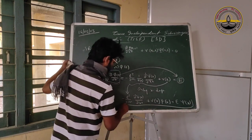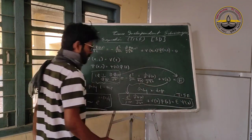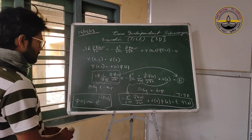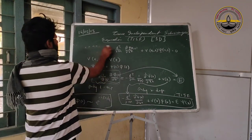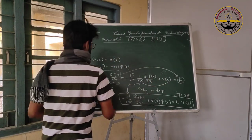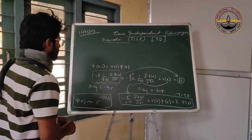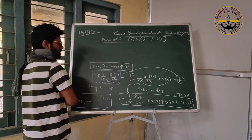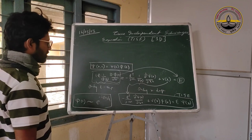This is our time-independent Schrödinger equation that we will be solving. The important question here is: what is the justification for this separation? We will discuss this because it is important.